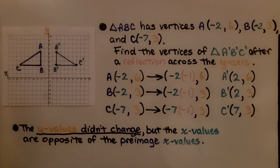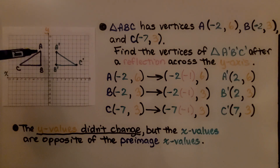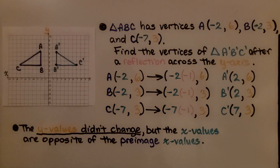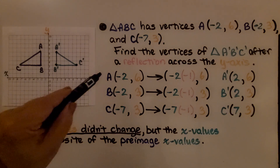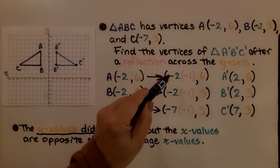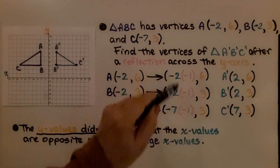Triangle ABC has vertices: A is at negative 2, 6; B is at negative 2, 3; and C is at negative 7, 3. Find the vertices of triangle A prime, B prime, C prime after reflection across the y-axis. Since we're going across the y-axis, we're going to multiply the x-values by negative 1.